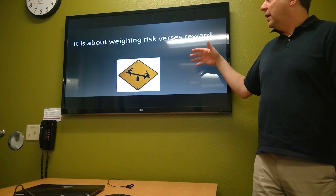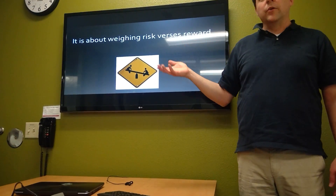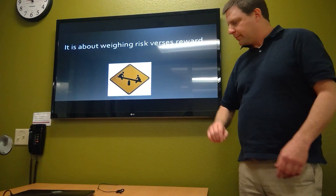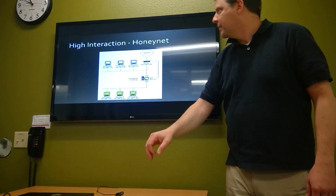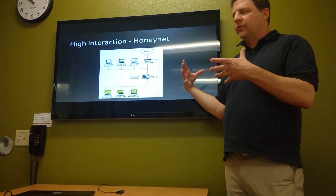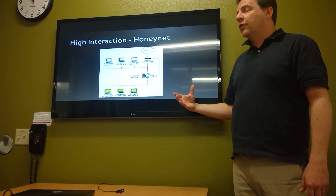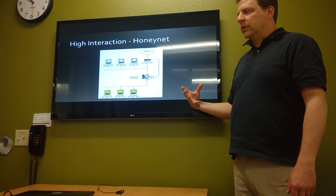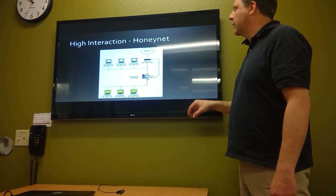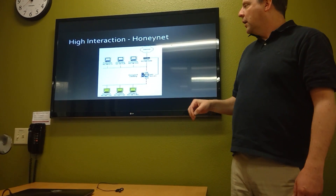What it comes down to is weighing the risk — the greater the risk, the greater the reward, like a teeter-totter. The low interaction is basically just a simple machine sitting on the network not really doing anything at all. A high interaction is a little bit more labor-intensive. This is an example of one of those high interaction ones, and it is actually called a honeynet. This is one of the newer approaches to using a honeypot.